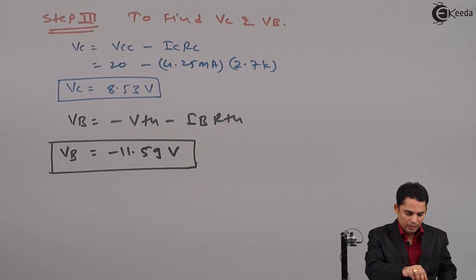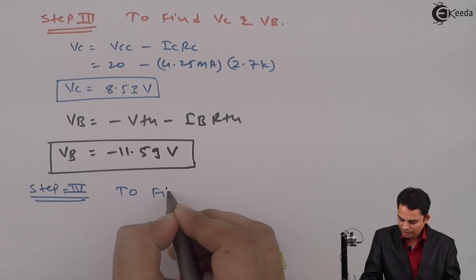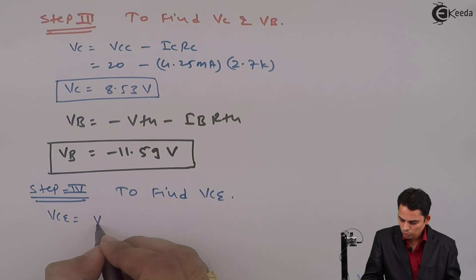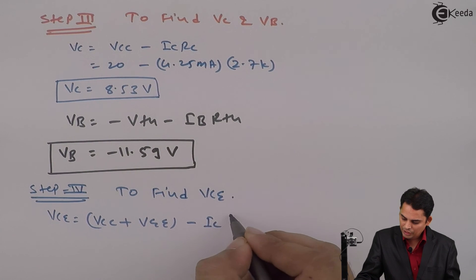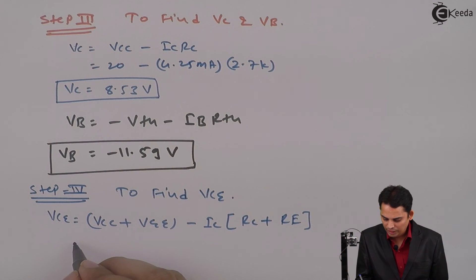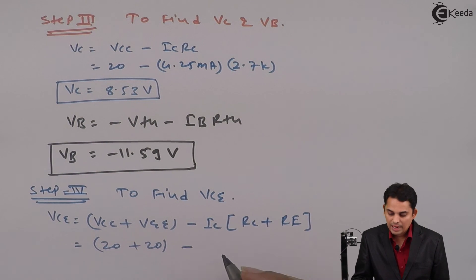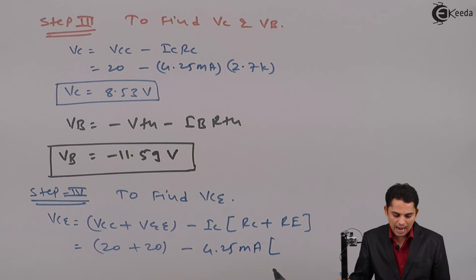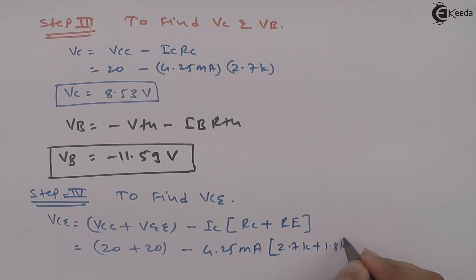Similarly, now in the last step, we need to find VCE. For that equation is VCE is equal to VCC plus VEE minus IC into bracket RC plus RE. VCC plus VEE can be written as 20 plus 20 minus IC is given as 4.25 milli amperes into bracket RC is 2.7K and RE is equal to 1.8K.